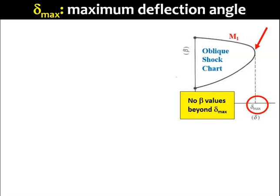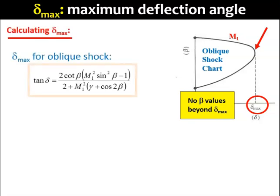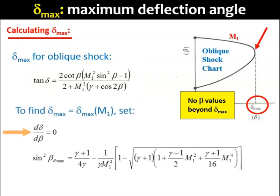To find delta max, we'll treat this problem as a mathematical problem. You have the equation of the tangent delta that represents each of this M1 contour. By differentiating this equation to get d delta divided by d beta and setting it to 0, you are basically setting the slope of the contour from its vertical orientation to be 0.